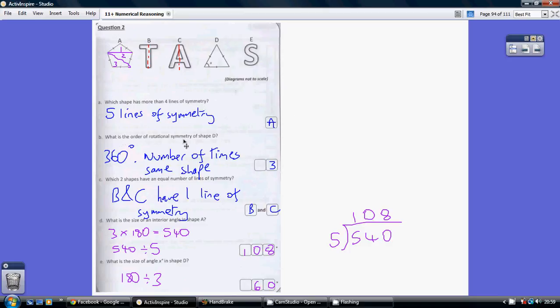What is the order of rotational symmetry for shape D? So for rotational symmetry it's how many times would this shape fit through a hole of exactly the same size if it was rotated 360 degrees. And that would fit through three times.